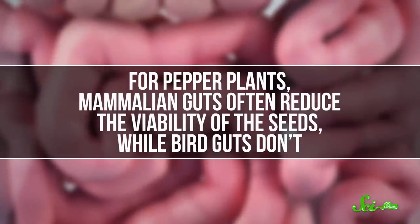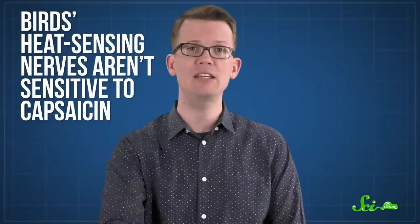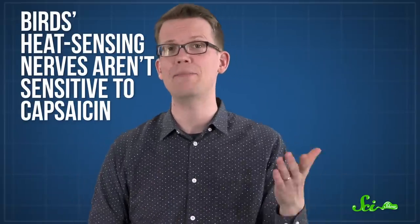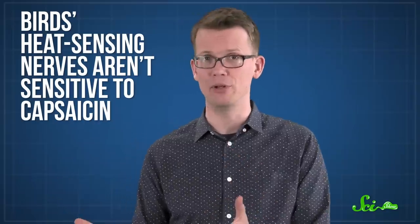For pepper plants, it turns out that mammalian guts often reduce viability of the seeds, while bird guts don't. So ideally, a pepper plant wants its fruits to be eaten by birds, but not by the likes of us. Birds' heat-sensing nerves aren't sensitive to capsaicin, so it seems like a perfect choice for a chemical defense against mammals.